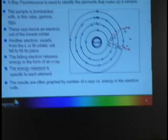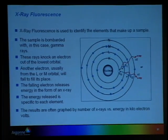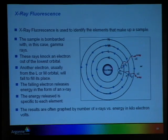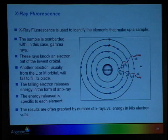This is one of the other techniques we use called x-ray fluorescence. It's very useful for metals because it can identify specific elements in your sample. Basically, the sample is bombarded with gamma rays, and the gamma rays will knock an electron from one of the inner orbitals. When that electron leaves, an electron from one of the second or third orbitals will fall in to fill that empty space, and energy is released in the form of an x-ray. By measuring the energy of the x-rays emitted, you can tell what element was in the sample.